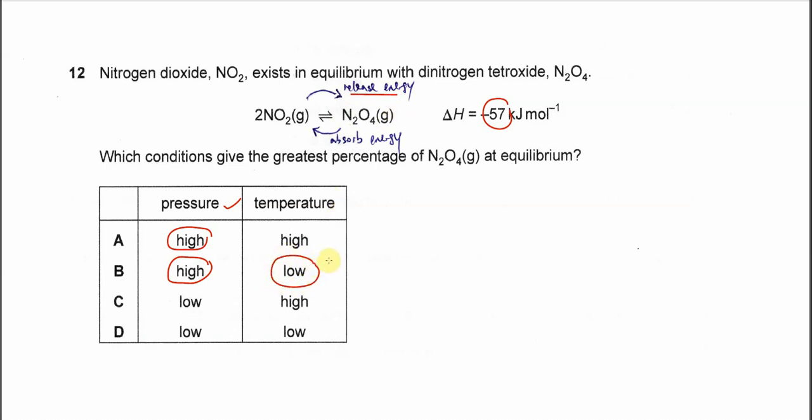When we lower the temperature, the equilibrium tries to increase the temperature by shifting from left to right. Then energy will be released.